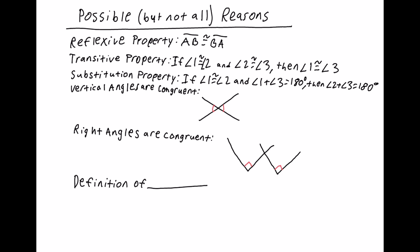Here's another one: a linear pair. If you have two angles that together form a line, they're a linear pair, and angle one plus angle two equals 180 degrees. Also keep in mind that possible reasons include any of the theorems that deal with parallel lines — you'll mostly use them in your conclusions, but you may also use them in your reasons themselves.